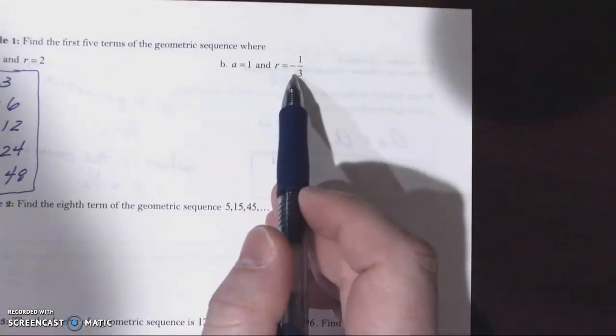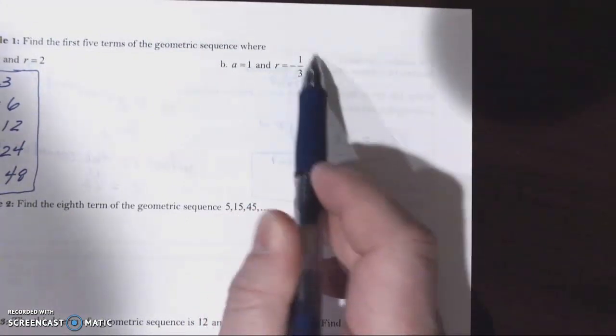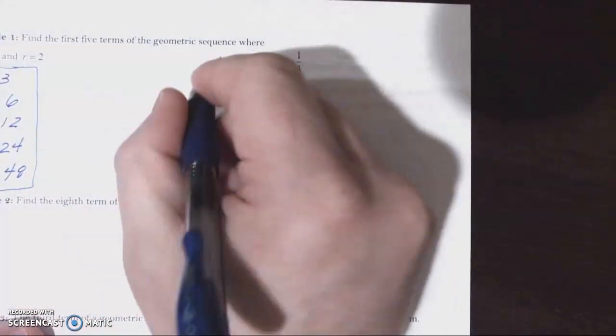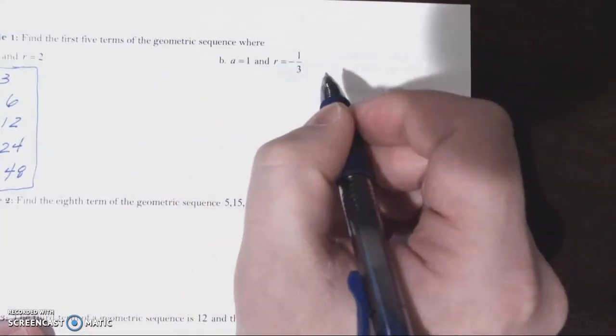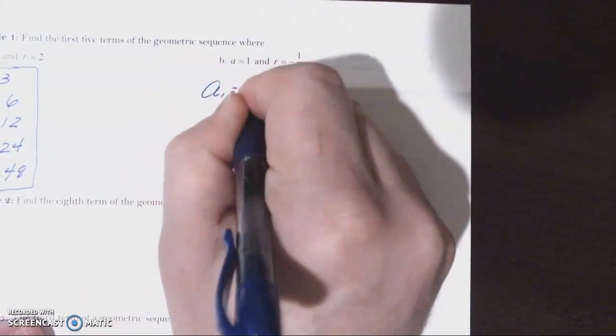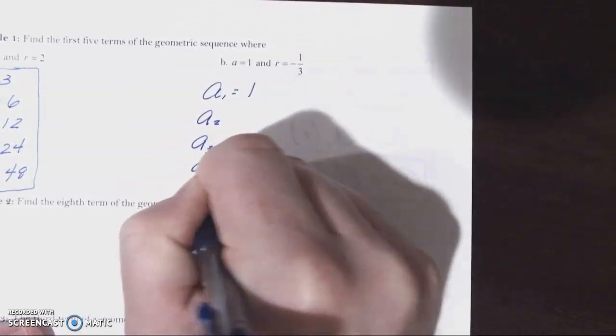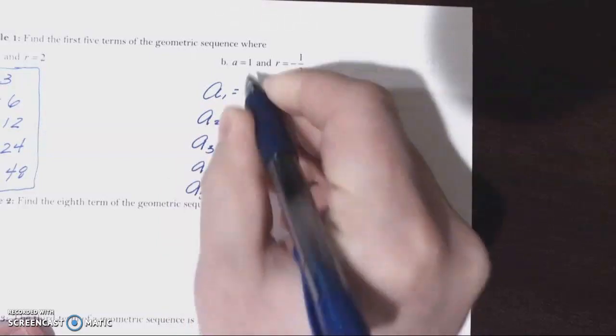First term of one, common ratio of negative one over three. So we'll see what happens when that ratio is negative. So first five terms. The first term is one. We're going to multiply each subsequent term by negative one-third. Well, one times negative one-third is negative one-third.